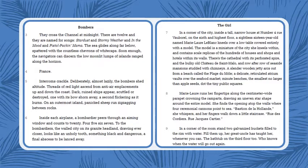'Bombers. They cross the channel at midnight. There are 12 and they are named for songs: Stardust and Stormy Weather and In the Mood and Pistol Pack and Mama. The sea glides along far below, spattered with countless chevrons of white caps. Soon enough, the navigators can discern the low moonlit lumps of islands ranged along the horizon. France.' This imagery of the sea gliding below, the chevrons and white caps, tells us about the airplanes crossing the channel — the water between France and England — confirming my predictions about the air battle setting.